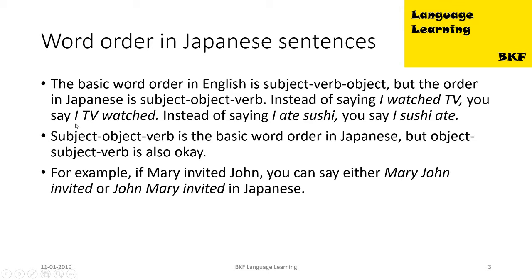Subject, object, verb is the basic word order in Japanese, but object, subject, verb is also acceptable. So for example, if Mary invited John, you can either say 'Mary John invited' or 'John Mary invited' in Japanese.